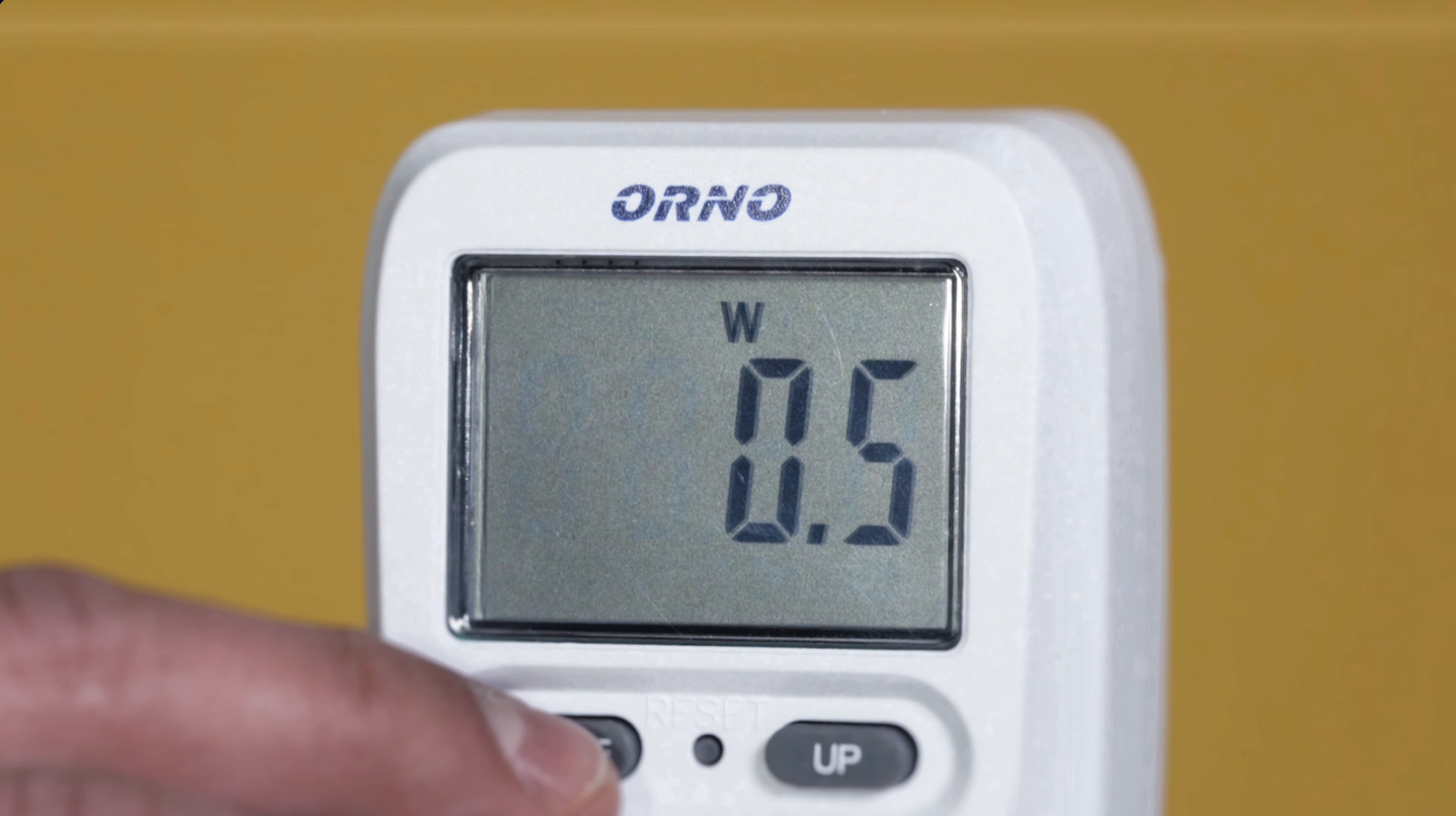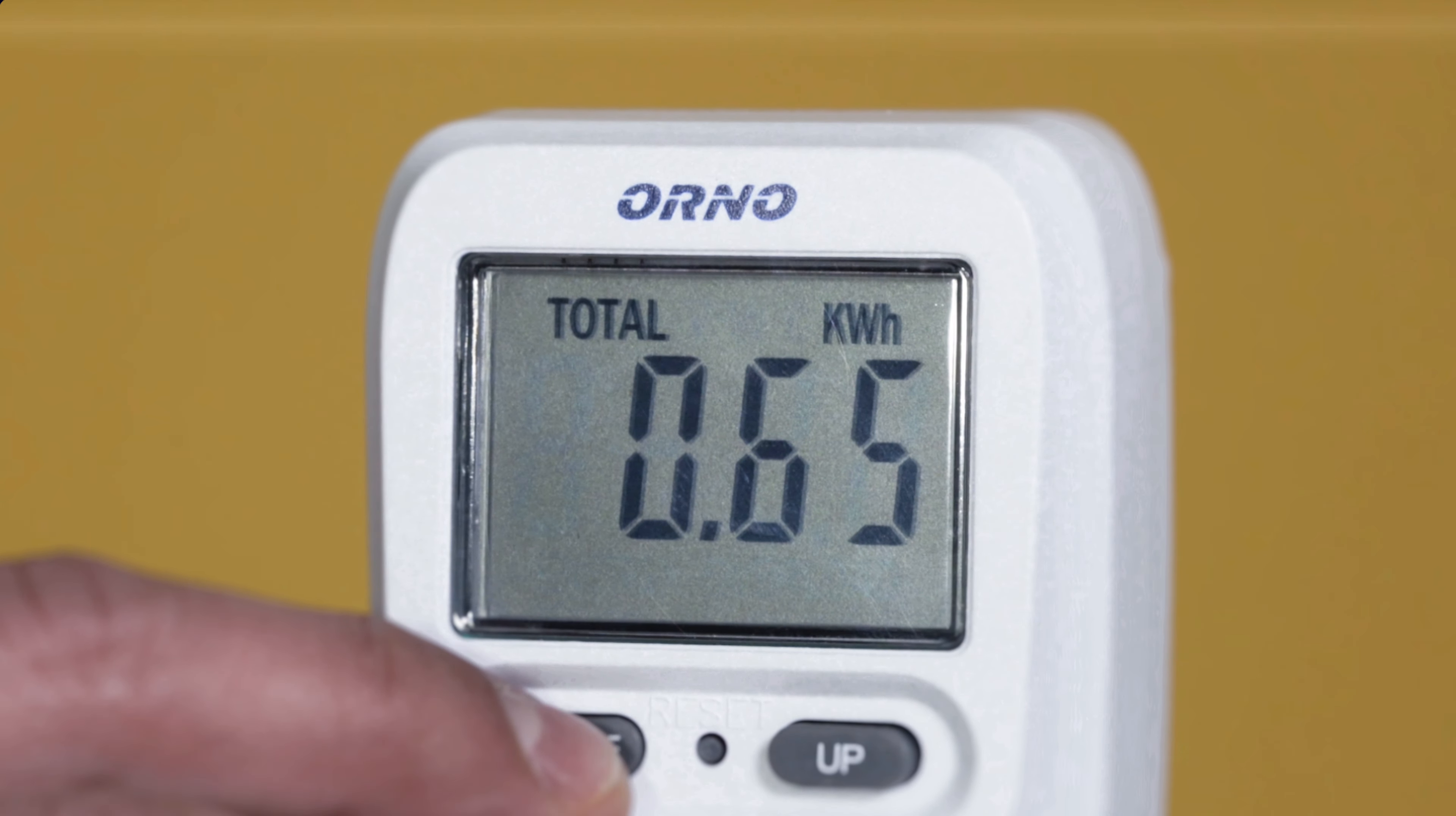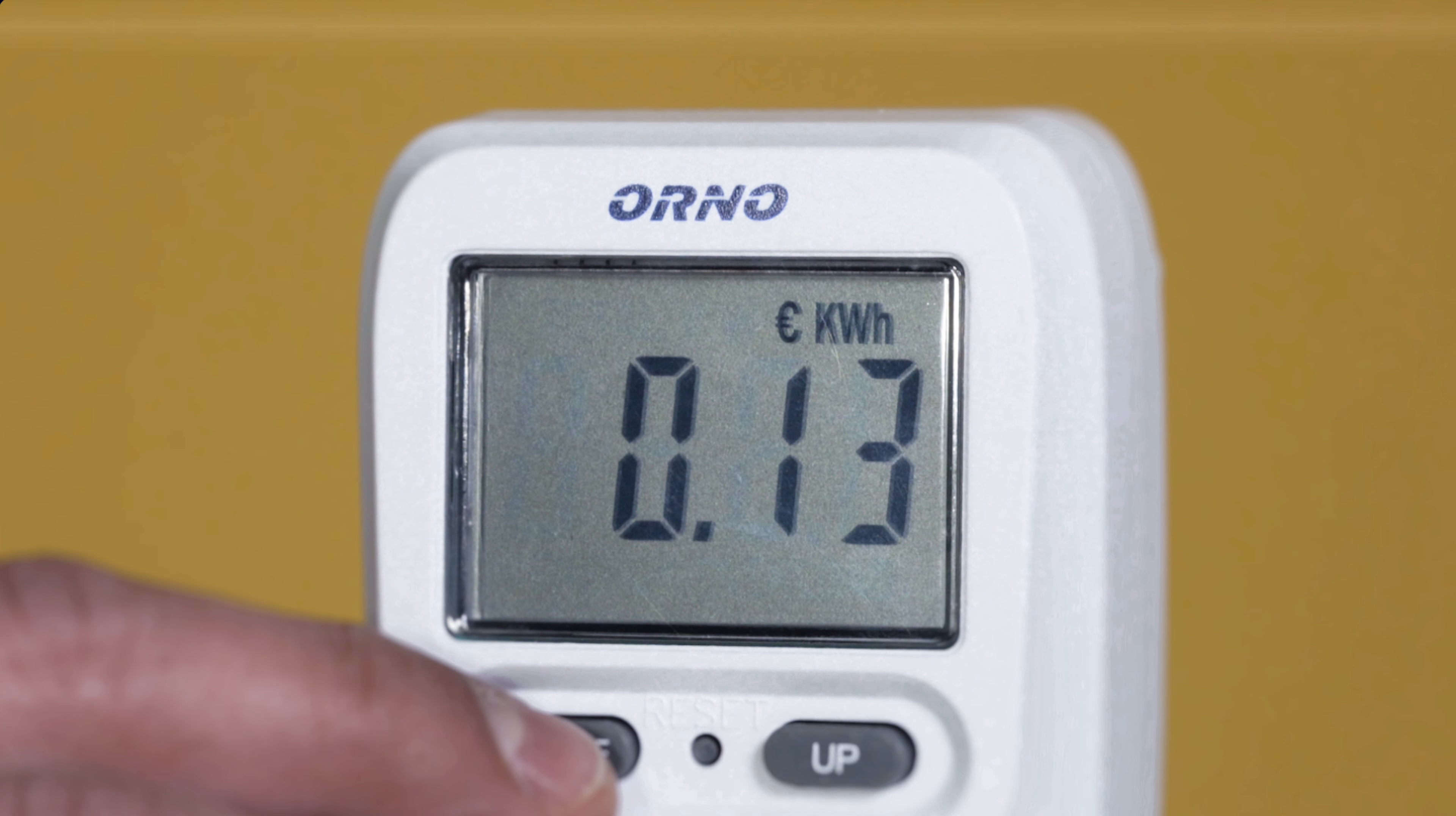By pressing the mode button, we look through the different measurements. The first measurement is the instantaneous power in watts. Then we have the voltage. Then we have the total power in kilowatt-hours so far. And here is the total price of what you have to pay. And the last one is not a measurement, but the price in kilowatt-hours in euros.